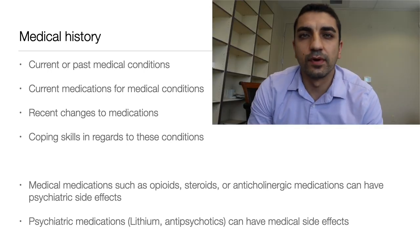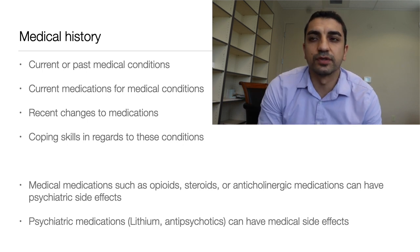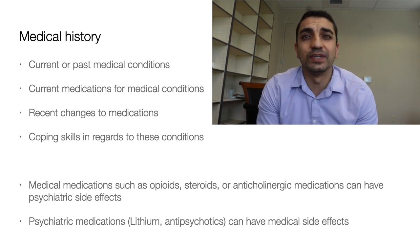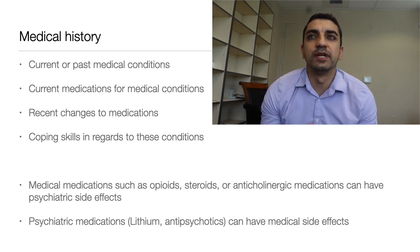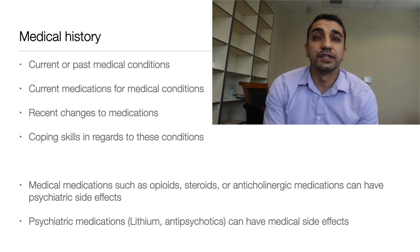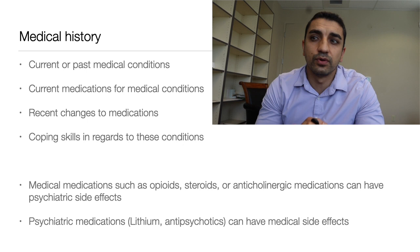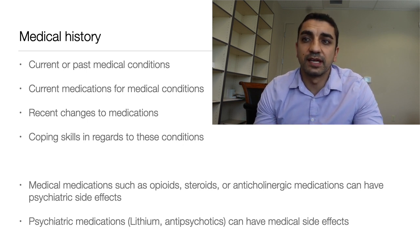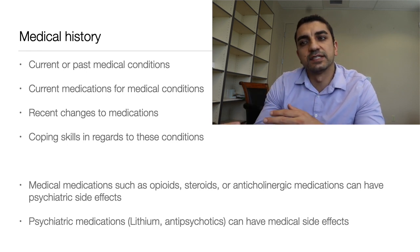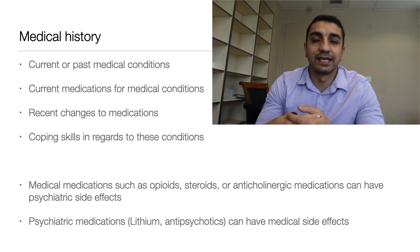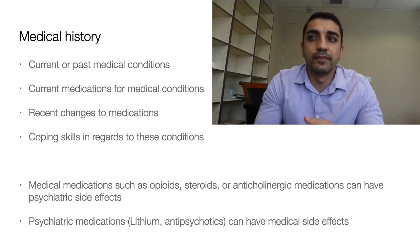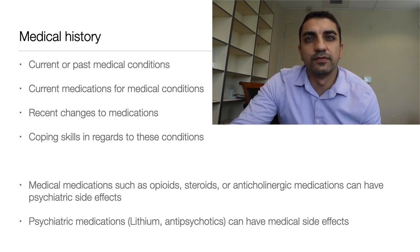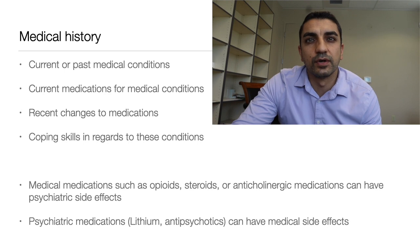Medical history is important — assess current or past medical conditions, what medications the patient is currently on, whether there have been any recent medication changes, and how they've been coping with medical problems. Certain medications like opioid pain meds, steroids like prednisone, or anticholinergic medications can all have psychiatric side effects. Conversely, some psychiatric medications like antipsychotics or lithium can have medical side effects, so it's important to get a good understanding of any medical causes at play.